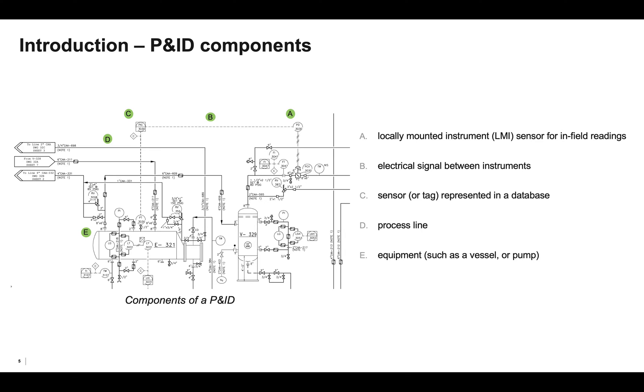Here is a section of a piping and instrumentation diagram. Next to A, we see instrumentation represented by a circle with text inside of it. This is referred to as an LMI, or locally mounted instrument. Next to C, we see a circle inscribed inside of a square, which represents a sensor, or more commonly referred to in industry parlance as a tag.